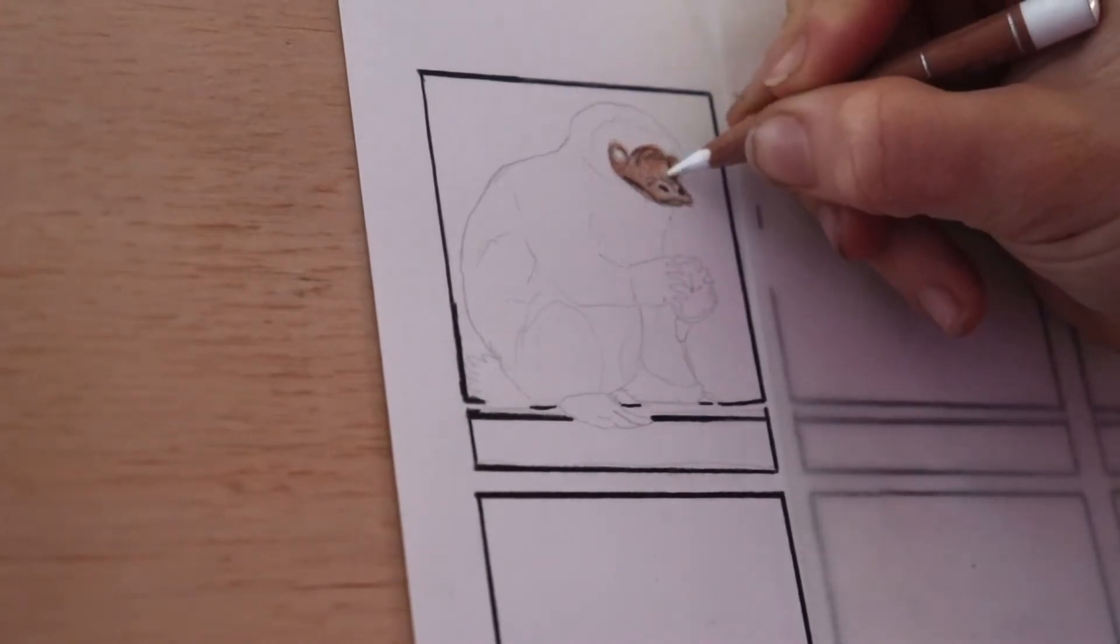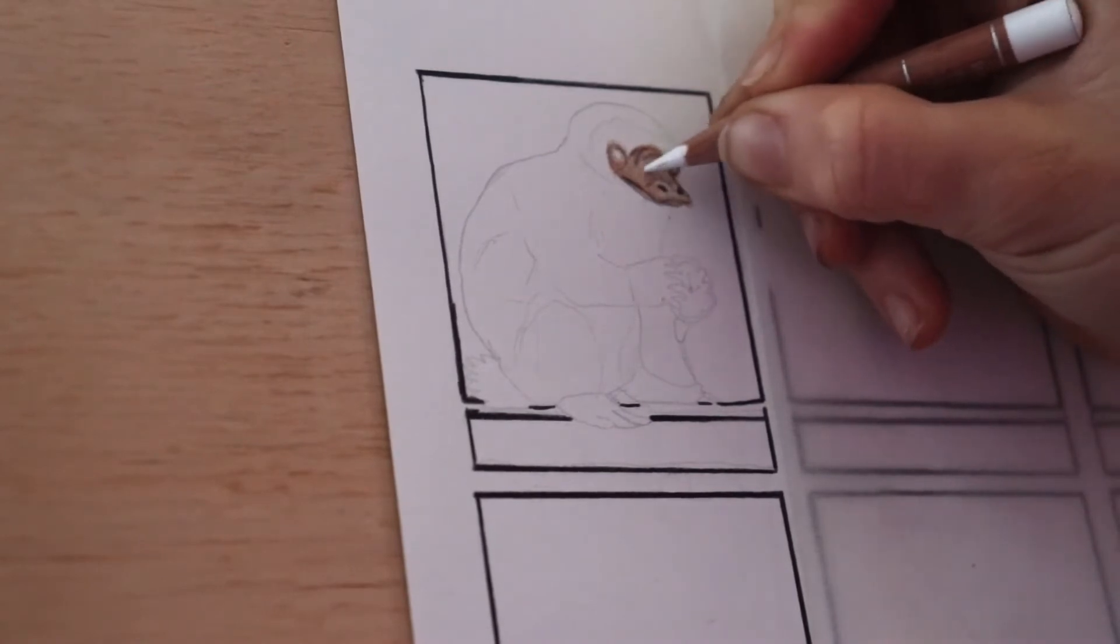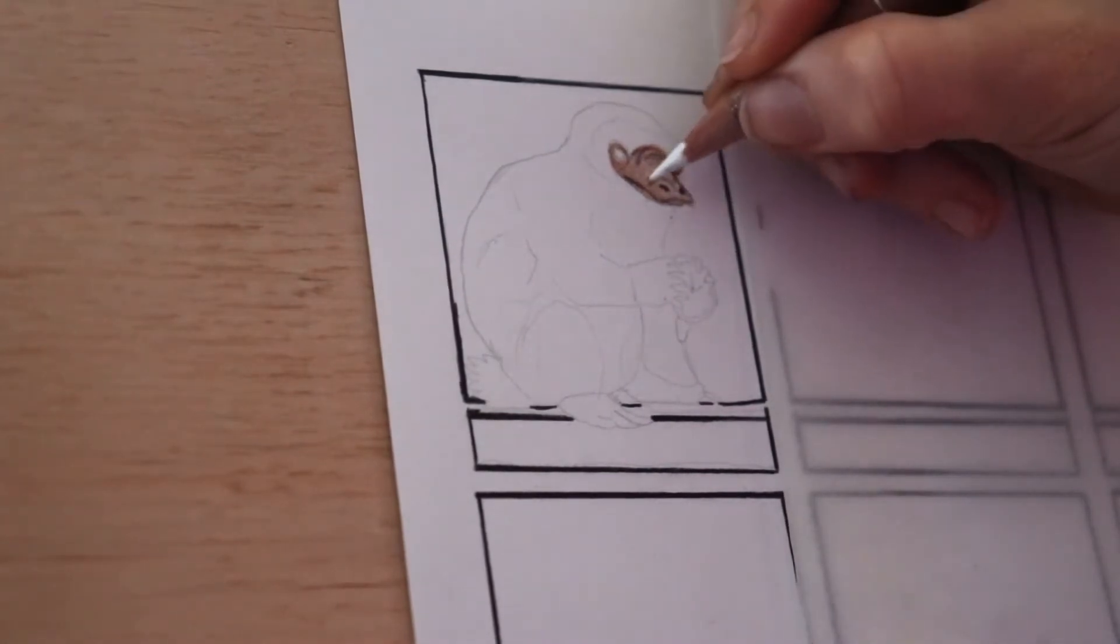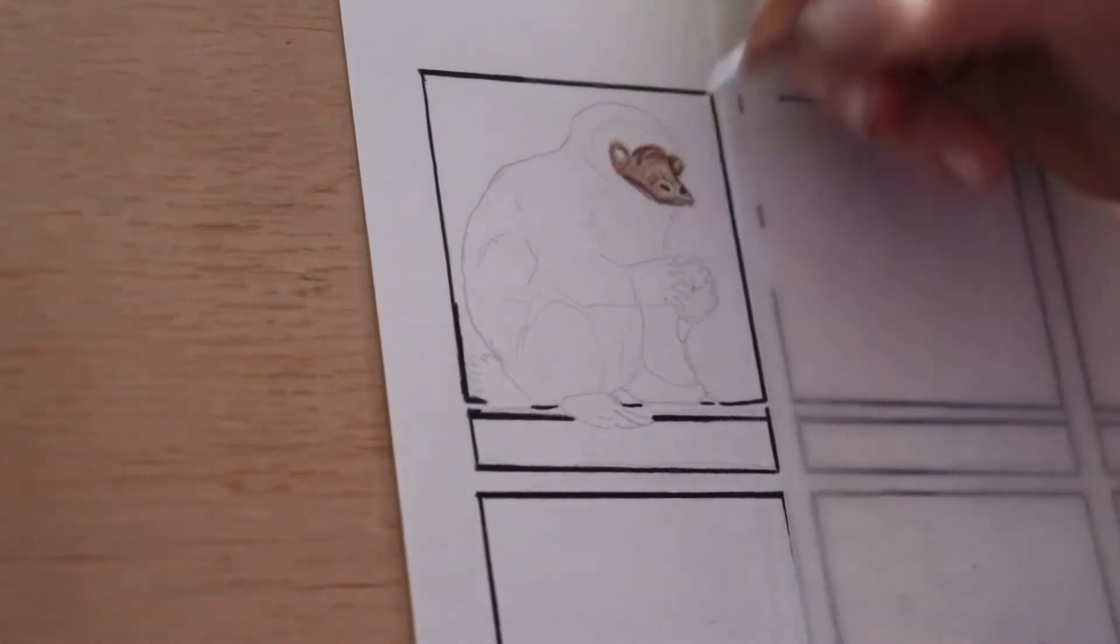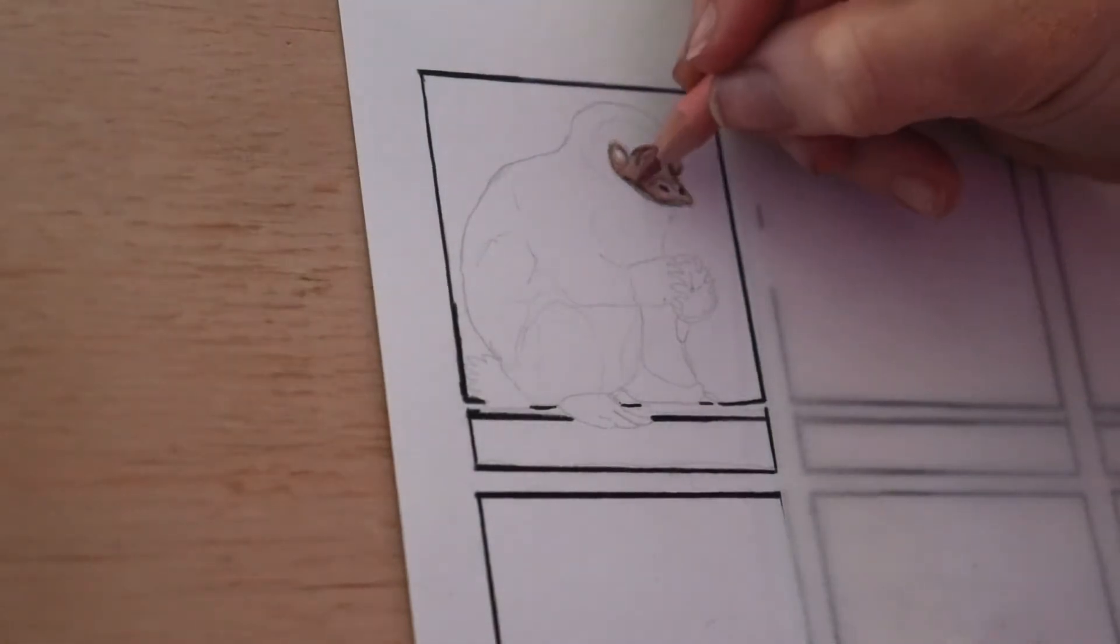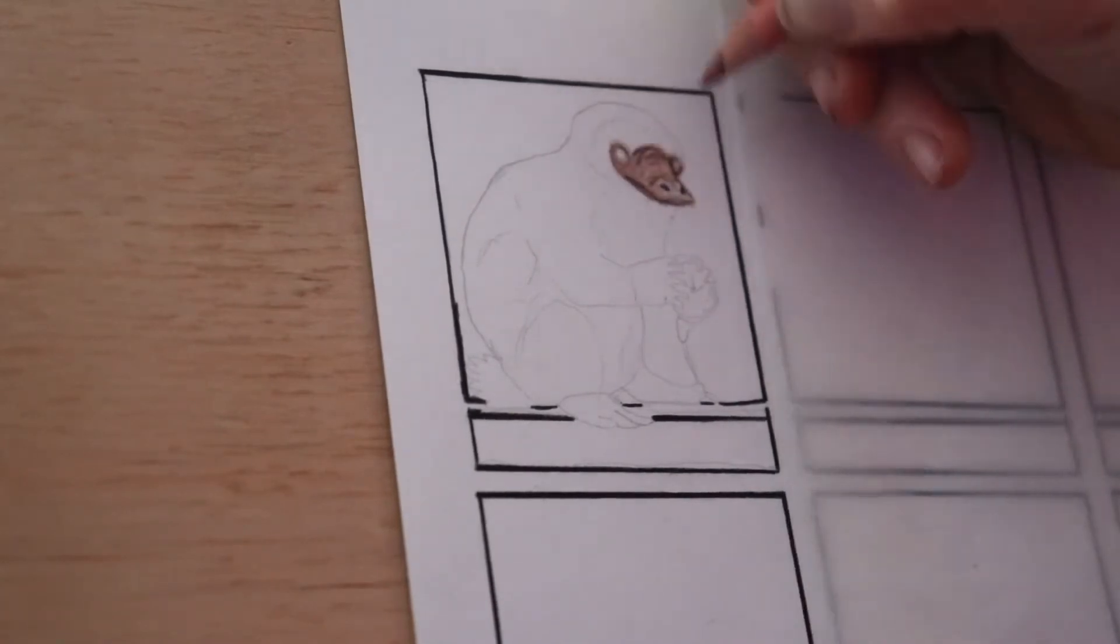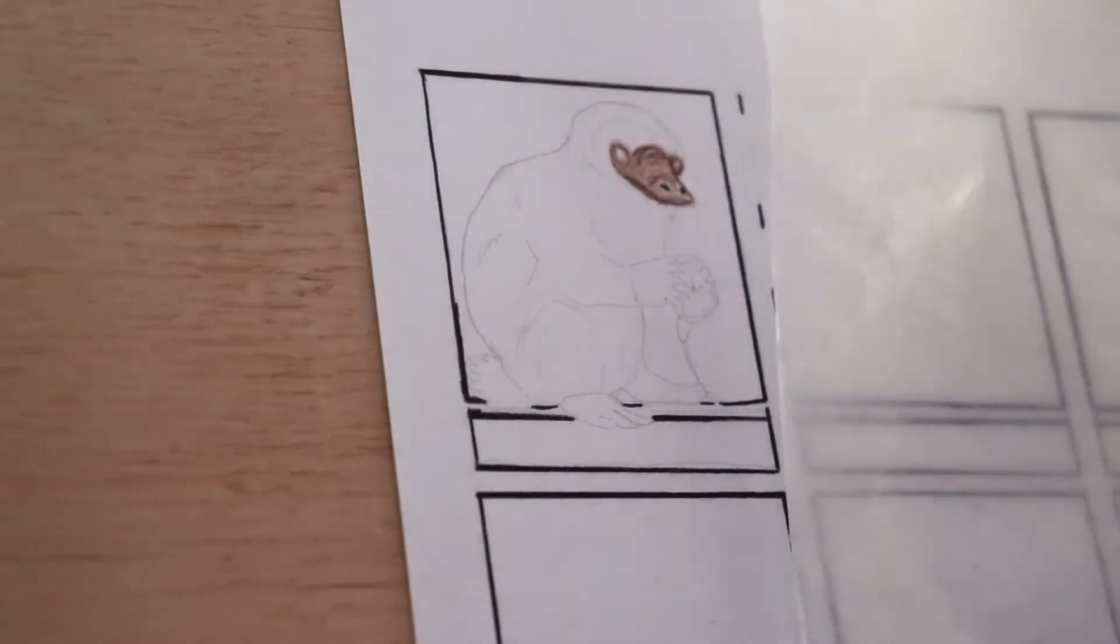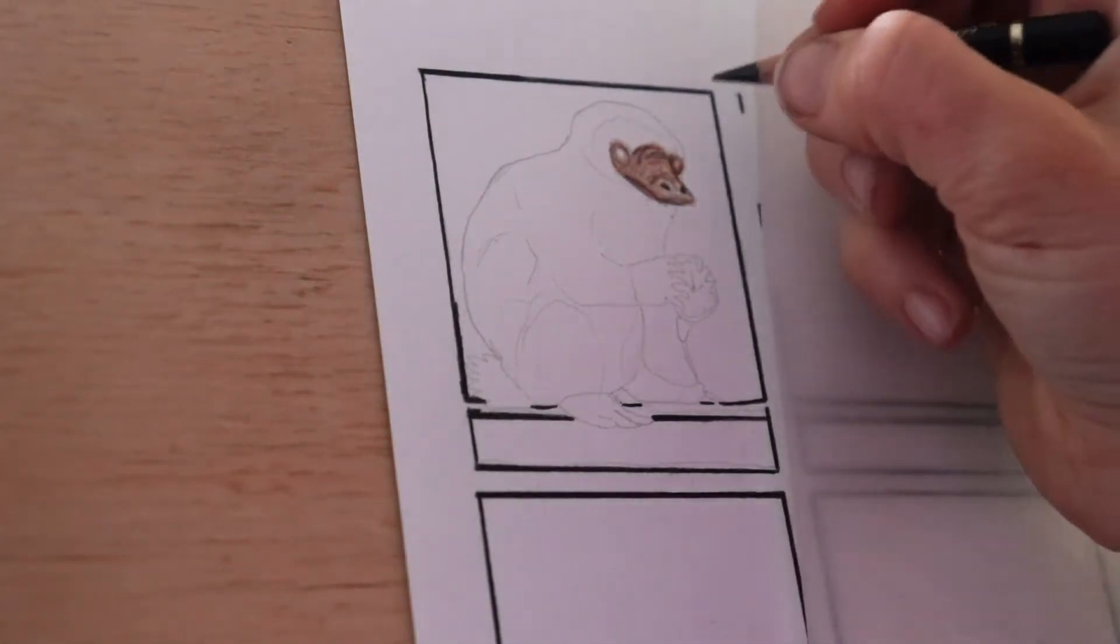Here I'm going back with my white and burnishing. Burnishing is when you're pushing very hard and you're flattening the tooth of the paper. Once you sort of burnish you can't get many more layers on it, so you do that on your final layers. I've just left enough tooth to go back and put some pink over just to put a little bit more saturation on it.